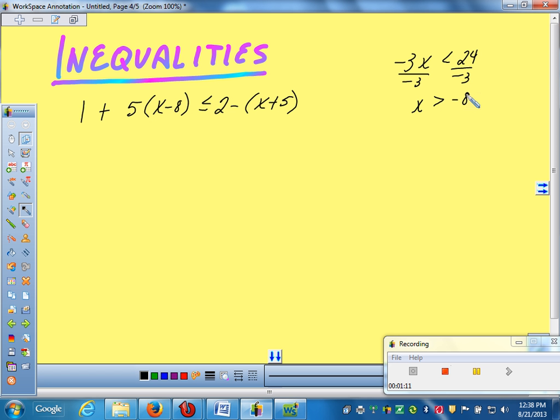That's the only difference when you're working with inequalities. It's only if you multiply or divide. If you're adding and subtracting negative numbers, it doesn't make a big difference. It's only multiplying and dividing by a negative. So in this case, what would you all do first? Distribute the 5.